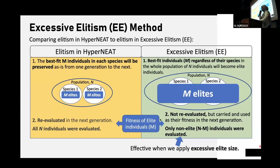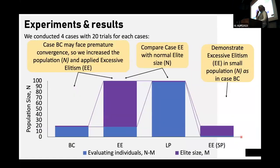By doing this, only ones that needs to be evaluated at each generation are the non-elite individuals, which is a minority when the elite individuals are in excess. We conducted four cases to test our method. First we assume a baseline case is BC, which a small population is often used due to the strong limitation of the evaluation cost. And this case may face premature convergence due to a really small population size.